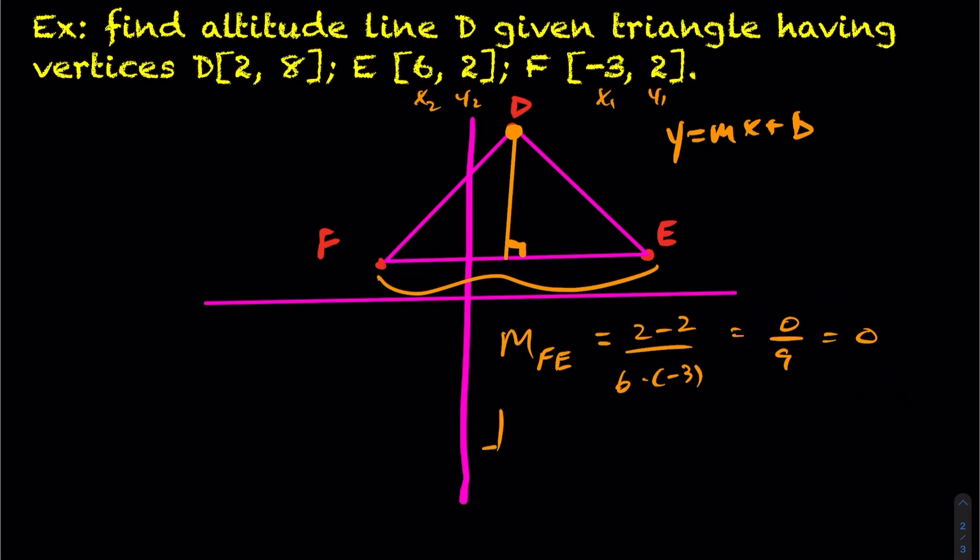So therefore, the perpendicular slope, if you have a perfectly horizontal line, the perpendicular slope will be a perfectly vertical line. So that means it'll be undefined in this example. So the slope will be undefined.